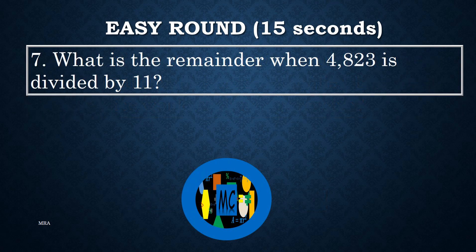Problem 7. What is the remainder when 4,823 is divided by 11?